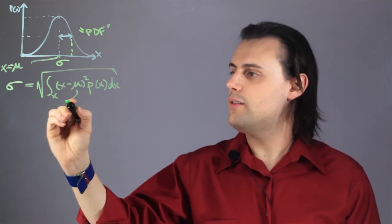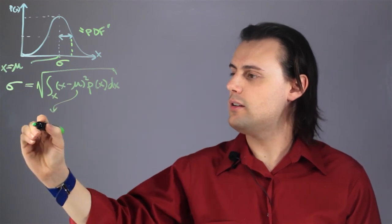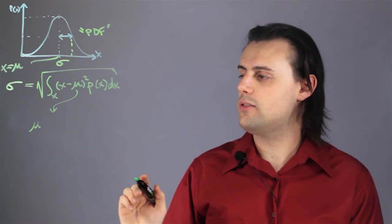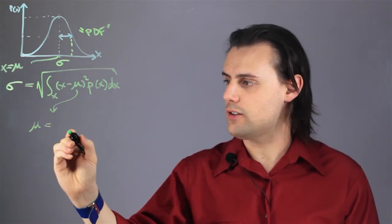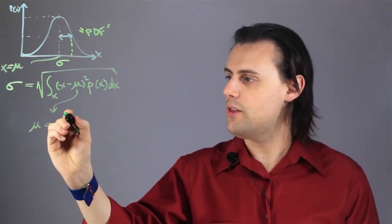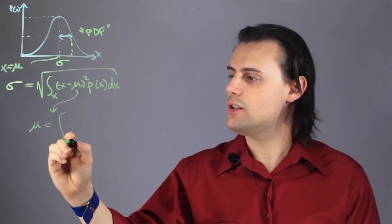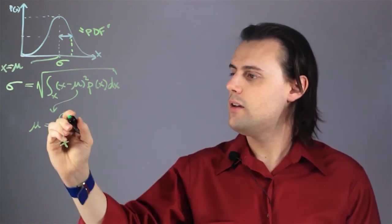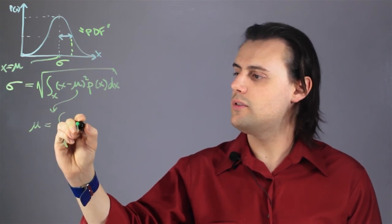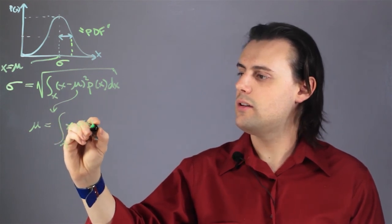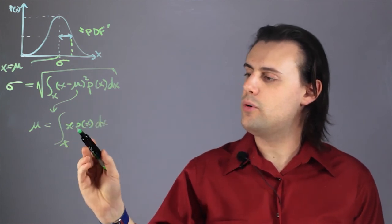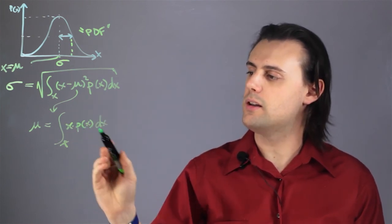And we can define and calculate the average value for this distribution in x in terms of another integral. So, mu, the mean or average, is defined as the integral over x of x times p of x dx, where x is a random variable, and this is the probability distribution.